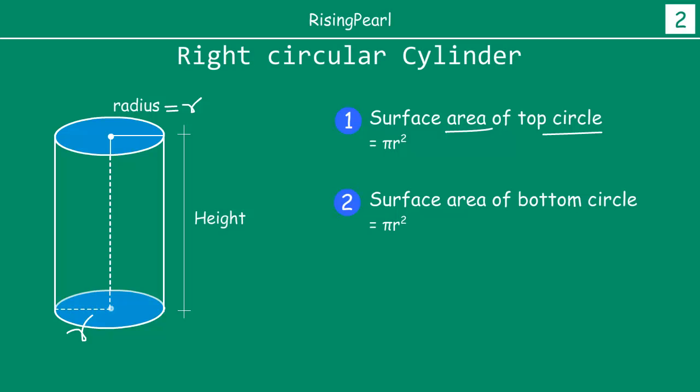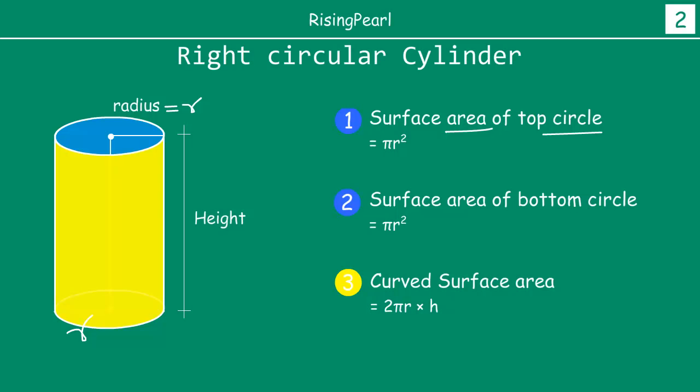Now we are left with the third part of the right circular cylinder, which is highlighted in yellow. So the curved surface area will be 2 pi R times H. So it will be 2 pi R H where H is the height of the cylinder from the top to the bottom.